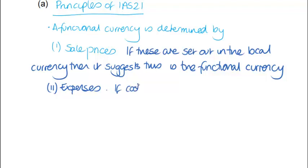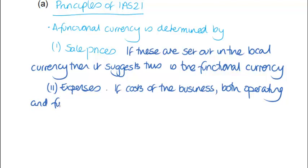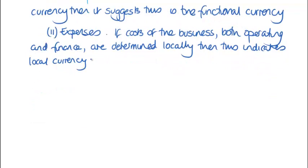The more local issues you have, the more likely the local currency is to be the functional currency. We've looked at income and we then turn our attention to costs and expenses. If the costs of the business — operational costs such as day-to-day running expenses but also finance costs — have we borrowed money from the parent company or from local banks? Here we appear to have borrowed money from local banks. These are all determined locally, which is evidence we should be using DINAS as the functional currency. However, it also says that 40% of our costs and expenses are in dollars, so we're not really able to make much of a conclusion in respect of expenses.